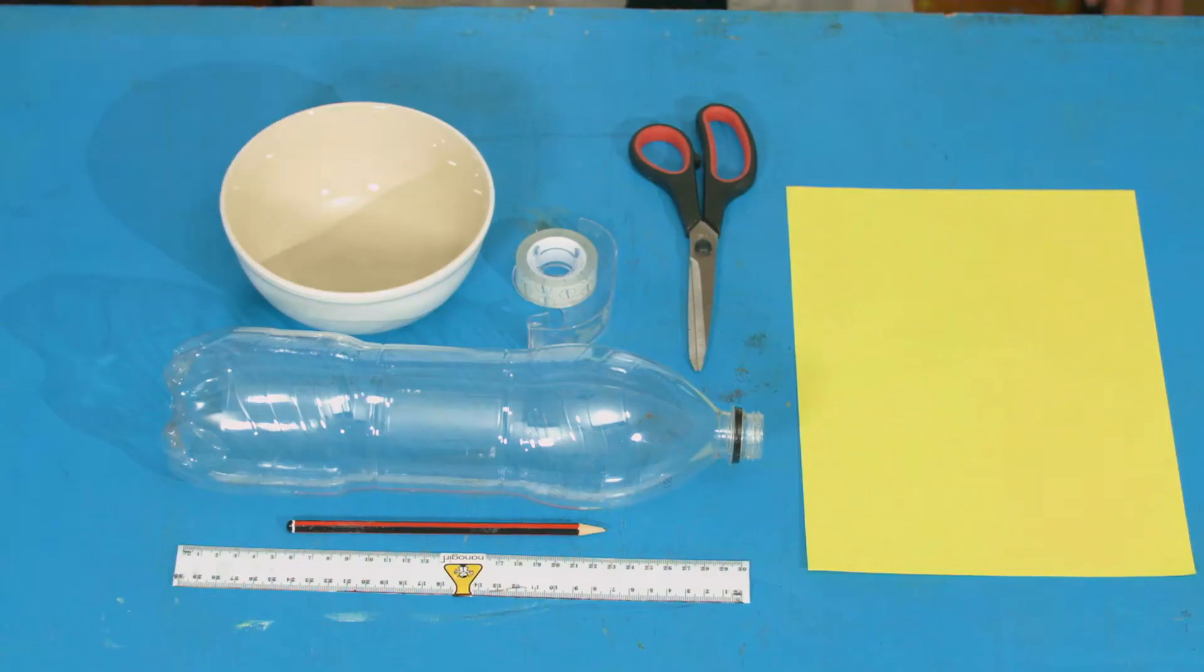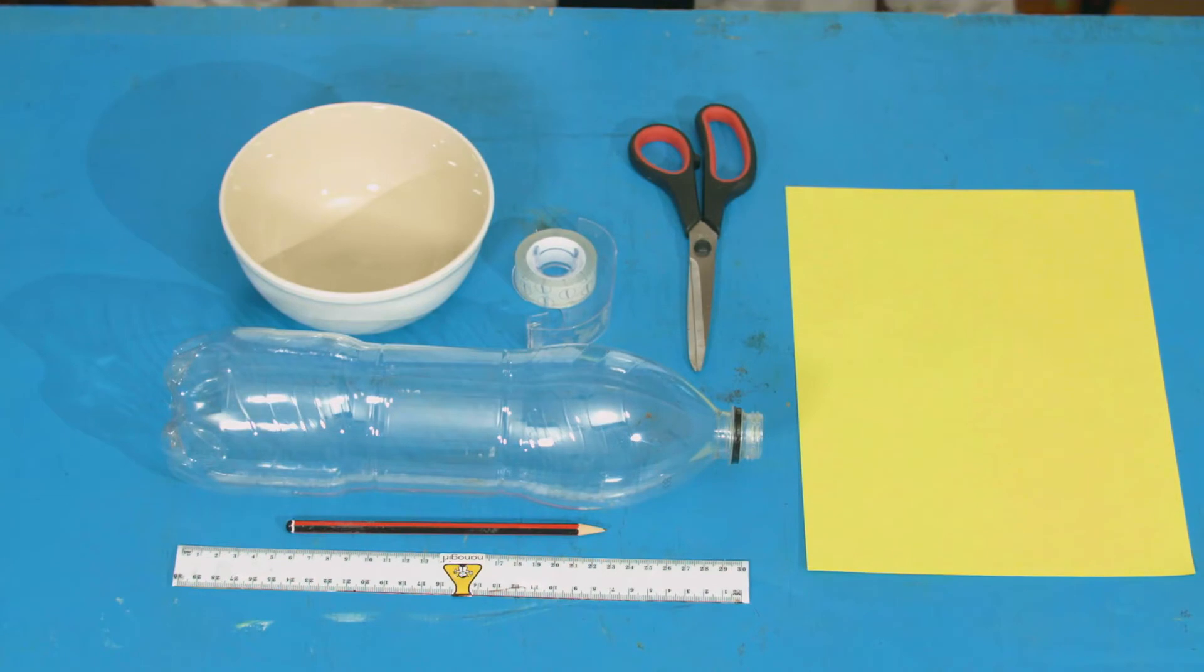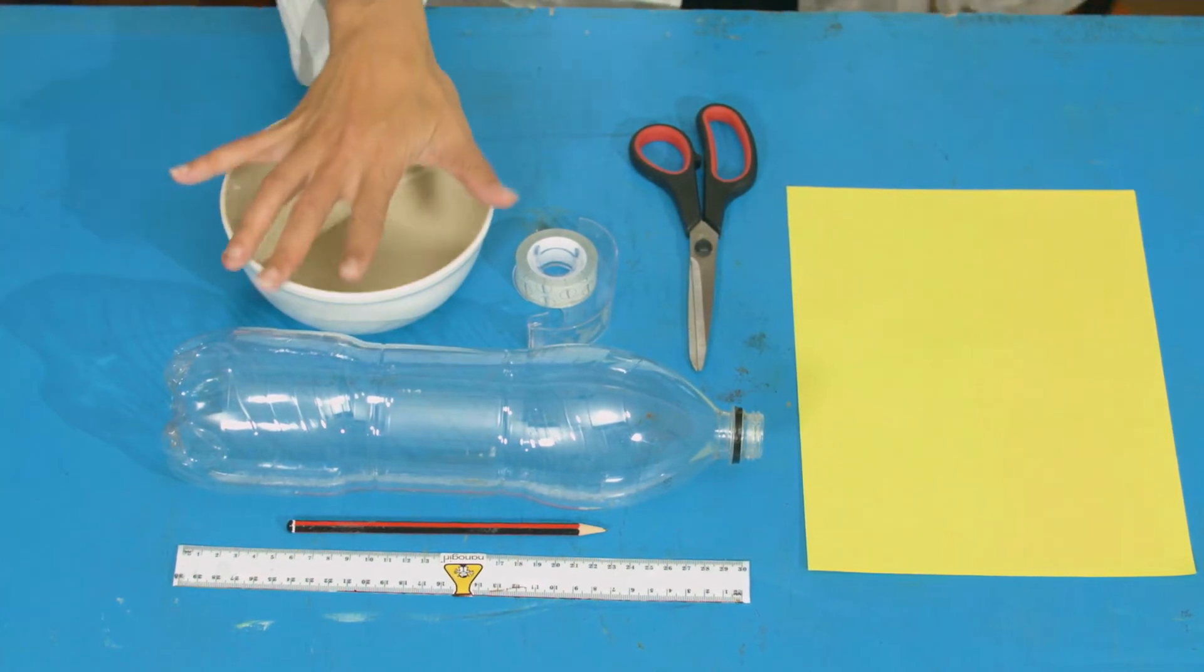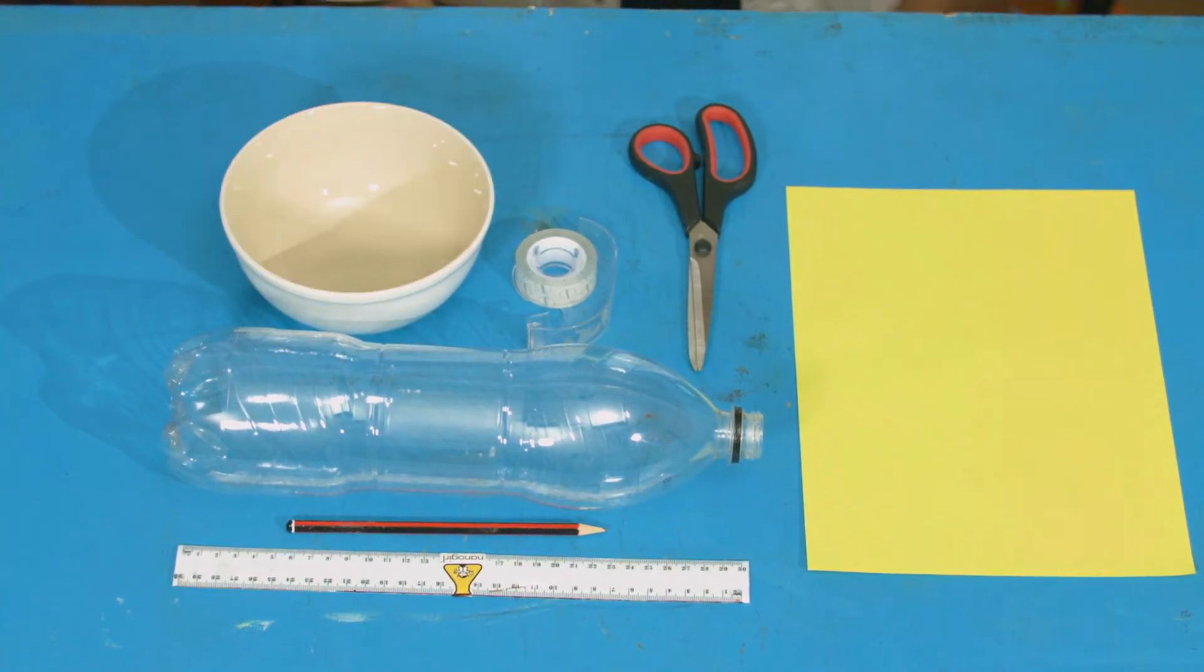You will need an empty plastic bottle like a large soda bottle or an empty milk bucket, something round to draw around like a small bowl, a piece of paper, scissors, a pencil, a ruler, and some sticky tape.